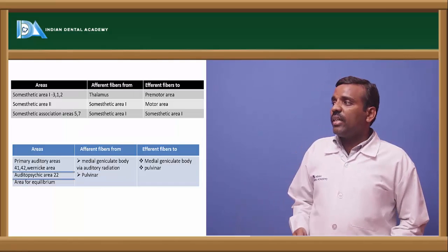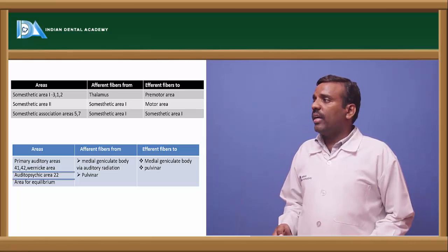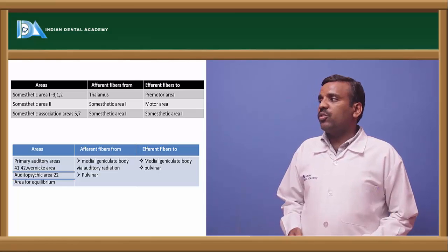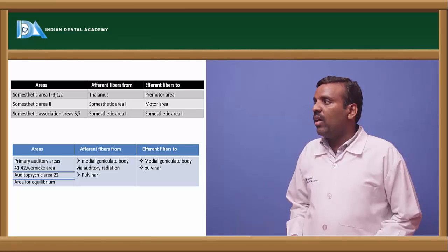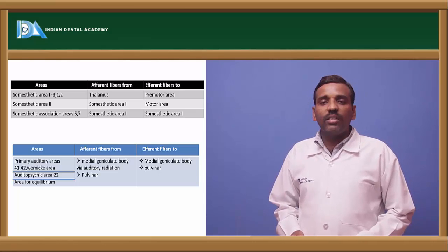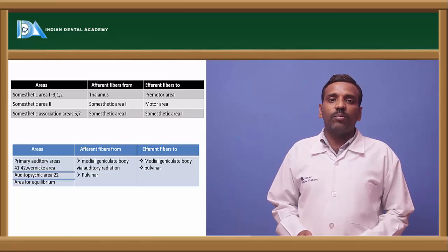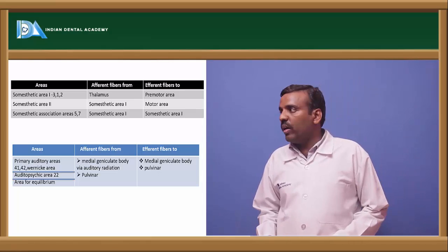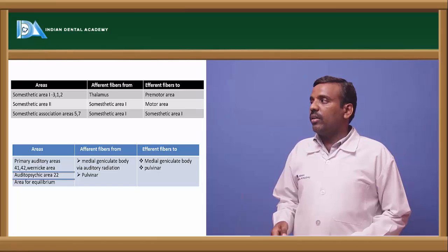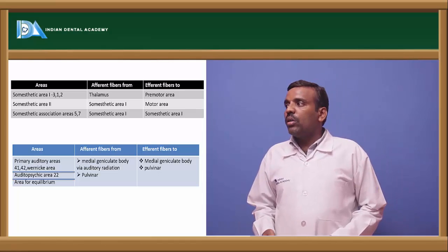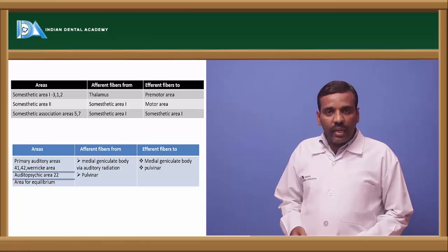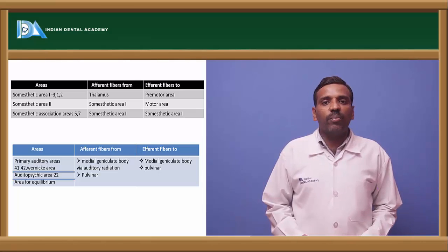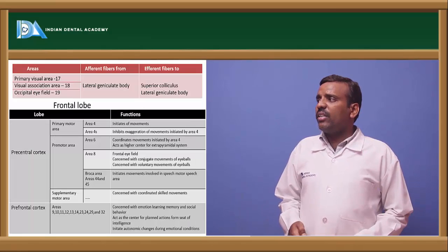Somesthetic area 1 covers areas 1, 3, and 2; somesthetic area 2 and somesthetic association areas 5 and 7 receive afferents from the thalamus. Efferents from somesthetic area 1 go to the pre-motor area; efferents from somesthetic area 2 go to the motor area; somesthetic association area efferents go to somesthetic area 1.